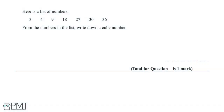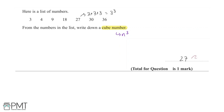We are given a list of numbers and asked to write down a cube number for one mark. A cube number can be written in the form n to the power of 3. From the list, 27 can be written as 3 times 3 times 3, which is 3 cubed. So 27 is a cube number, and you get one mark for that correct answer.